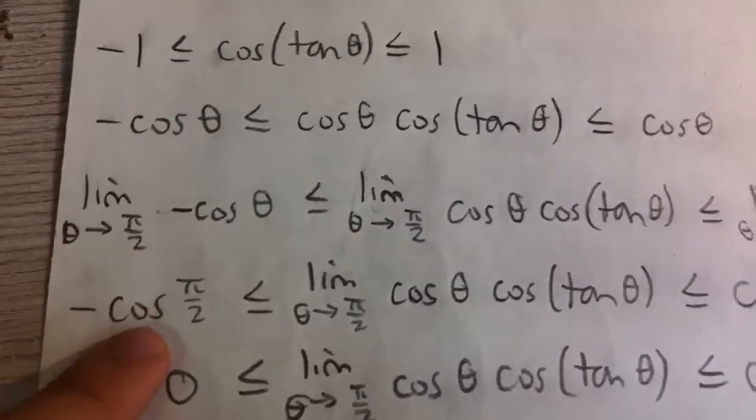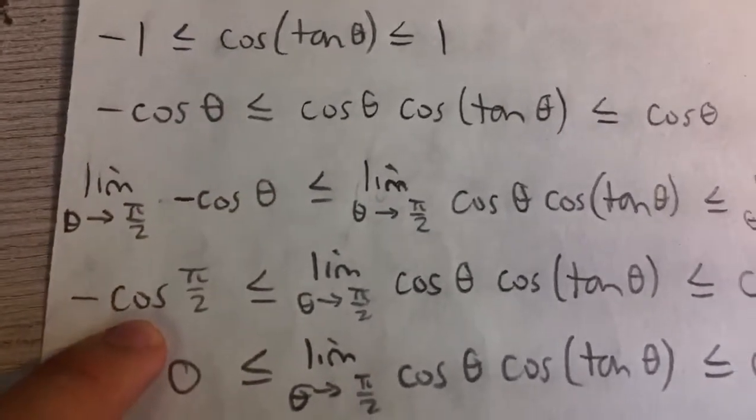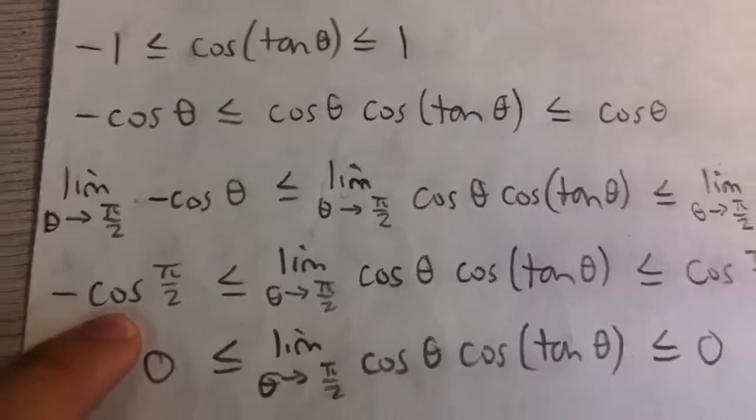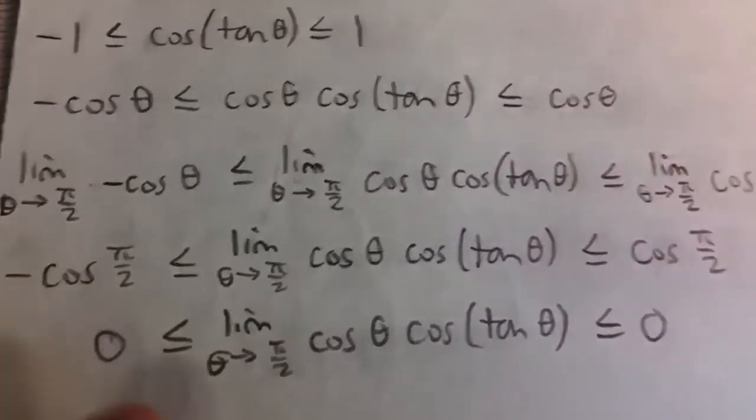So that's by plugging in pi over 2. So we plug in pi over 2 here we get negative cosine pi over 2. Remember cosine pi over 2 is 0 so it's just 0.